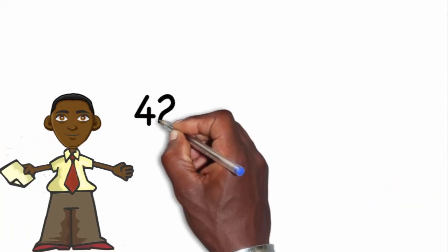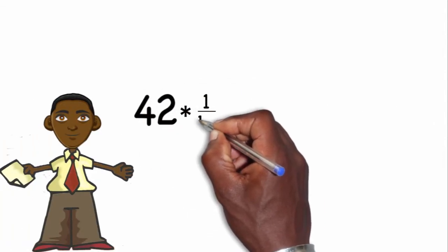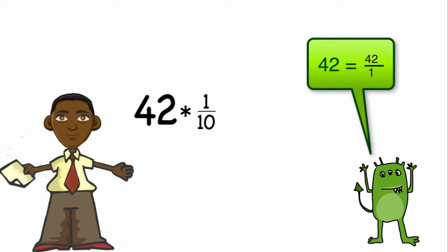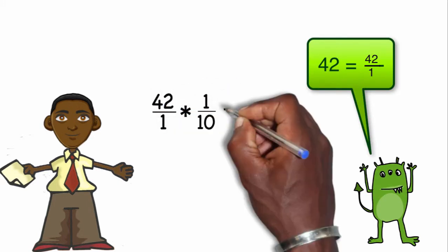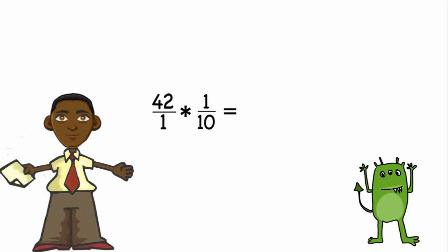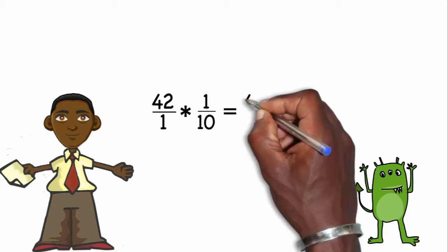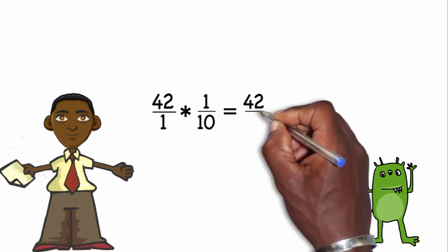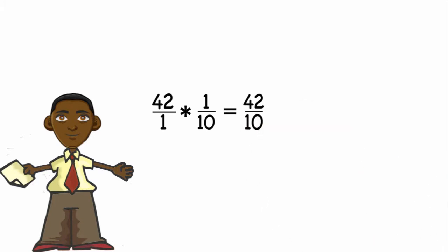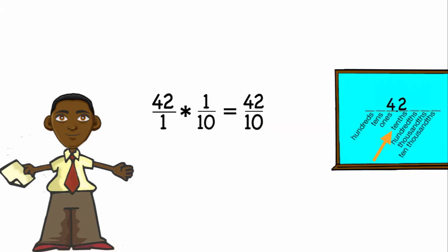Our first problem says 42 times 1 tenth. The first thing I'm going to do is turn that 42 into a fraction by placing a 1 at the bottom. Now to multiply fractions, I'll do top times top and bottom times bottom. 42 times 1 is 42 and 1 times 10 is 10. So now we have 42 tenths.